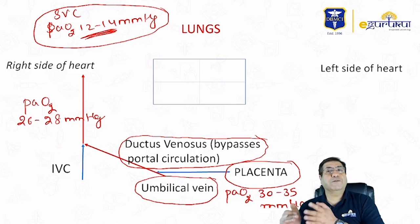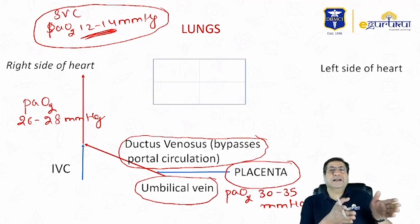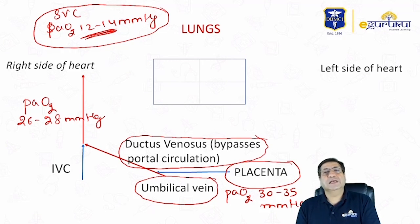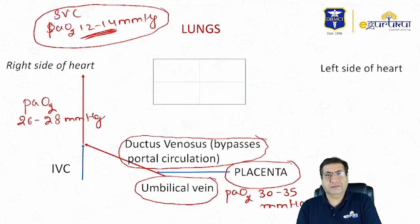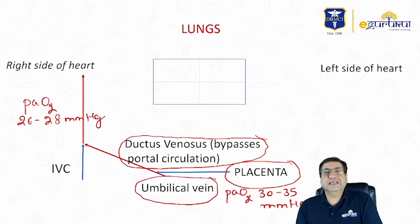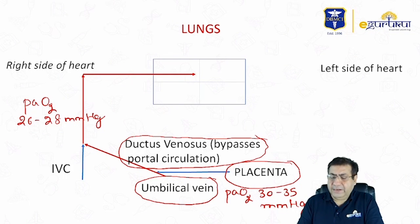So the inferior vena cava, before entry of the ductus venosus was primarily deoxygenated, but suddenly becomes quite oxygenated. The oxygenated blood from the placenta drains into the umbilical vein, 50% enters the portal circulation, the remaining 50% enters the ductus venosus, which bypasses the portal circulation and drains into the inferior vena cava. This inferior vena cava then enters the right side of the heart — the right atrium.